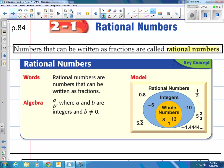What is a rational number? Numbers that can be written as fractions are called rational numbers. So anything that can be written as a fraction is a rational number. What are rational numbers? Anything that can be written as a fraction.